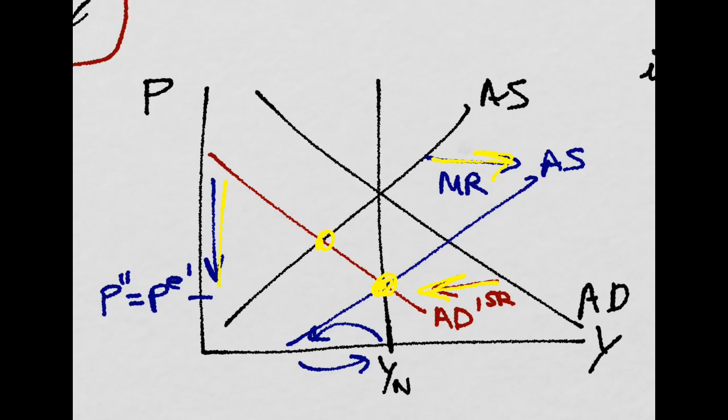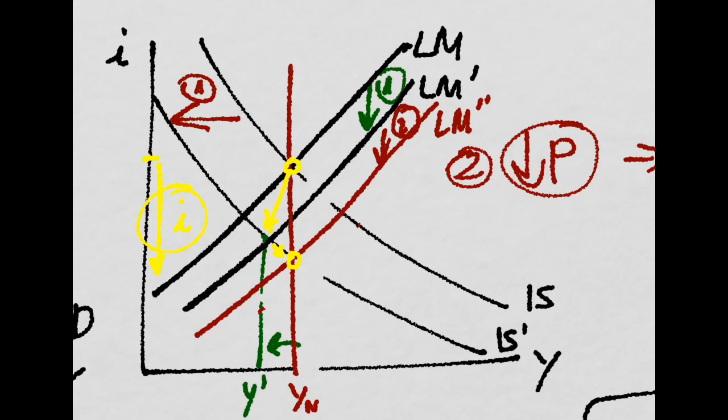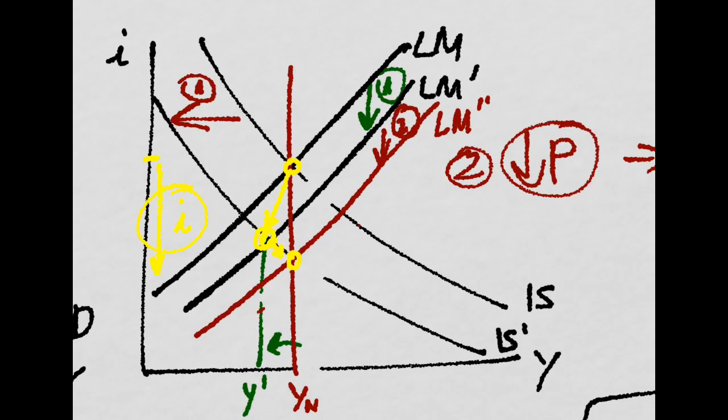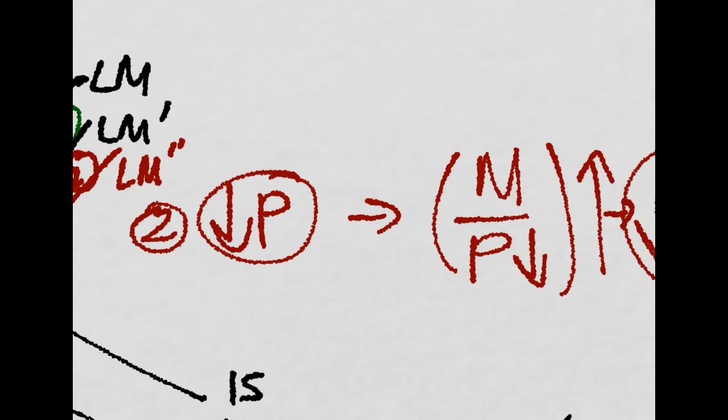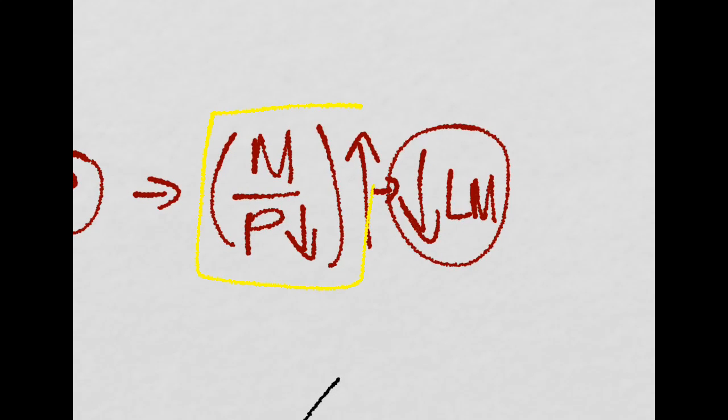In the ISLM, after reaching this first equilibrium, we realize that prices keep on going down. If prices keep on going down, then real money stock goes up. And then the LM shifts farther down.